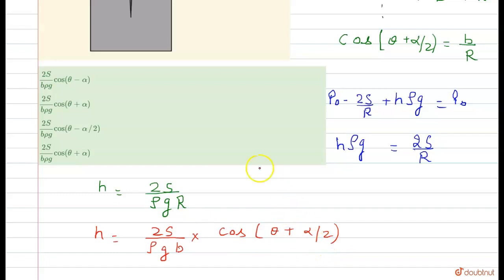Now check the option. 2s by b rho g into cos plus alpha by 2... There is no any option matching exactly.